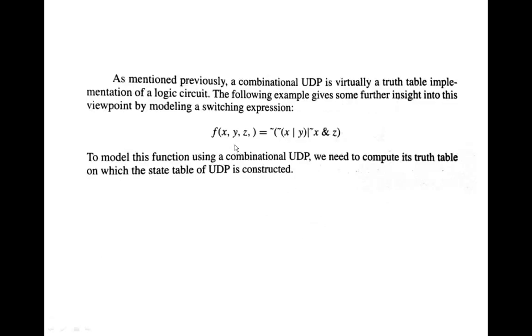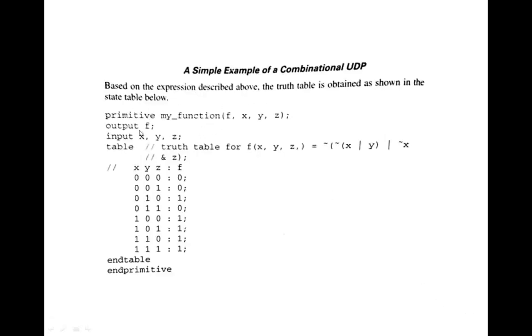So let us go to the next example. Here we have taken one function in order to show how to implement a given function using a UDP. So here the negation of x or y, this whole is OR'd with negation of x and z value. The whole is negated. So what you have to do is you have to first assess the truth. That function is primitive space my_function, this is a user defined name, output followed by input.